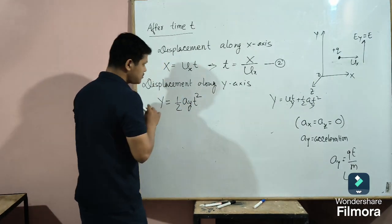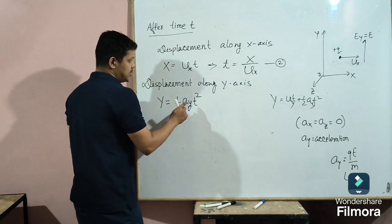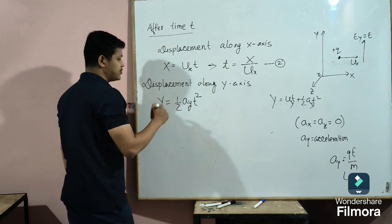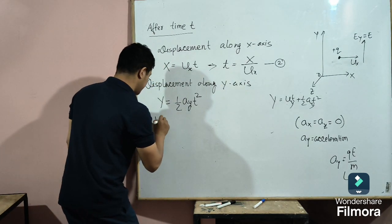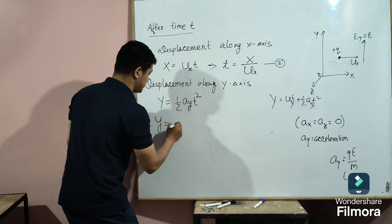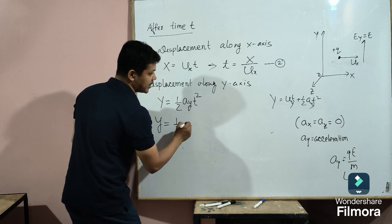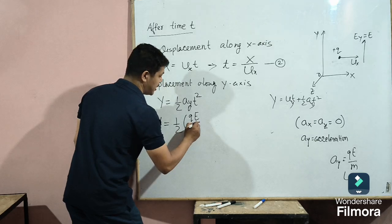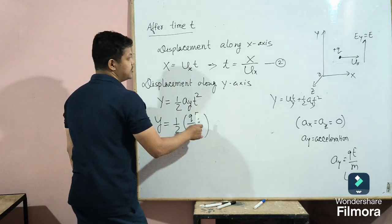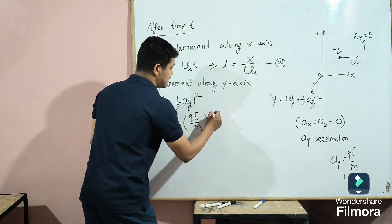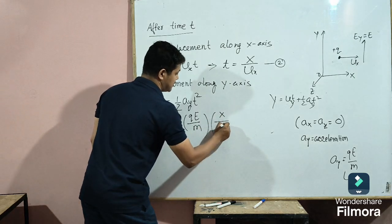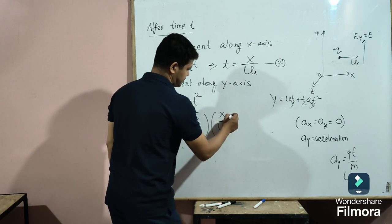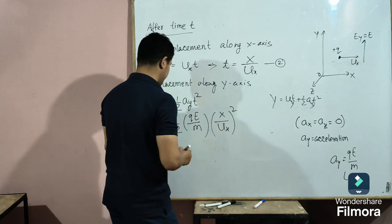From equation number 1, AY equals QE by M. Substituting into Y equals half AY T squared, and replacing T with X divided by Ux from equation number 2, we get Y equals half times (QE/M) times (X/Ux) squared.